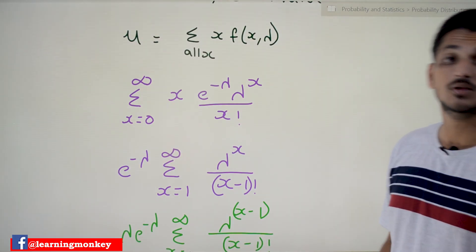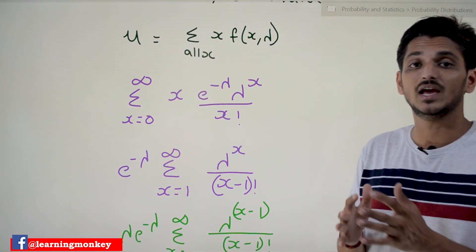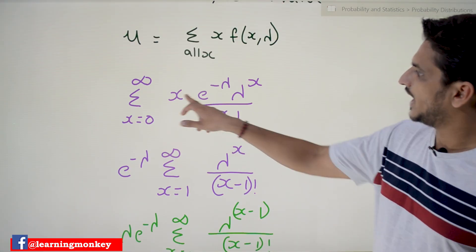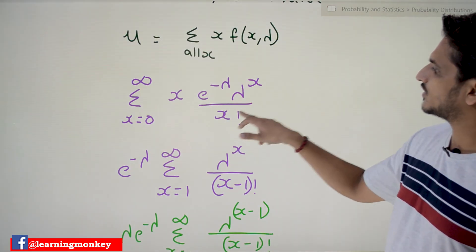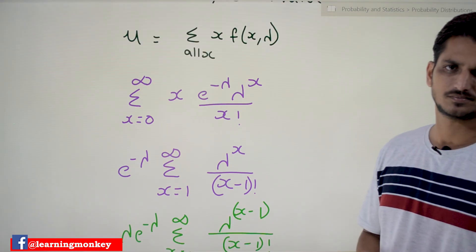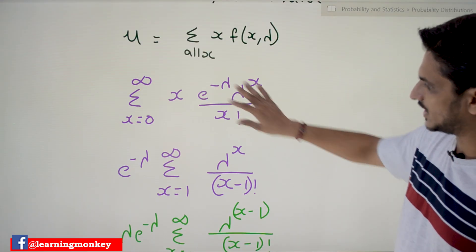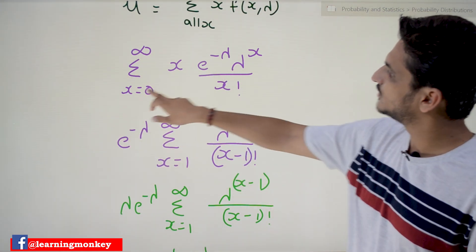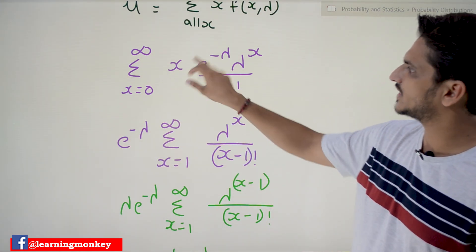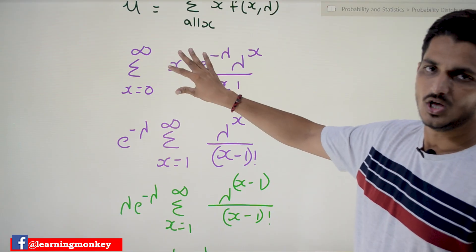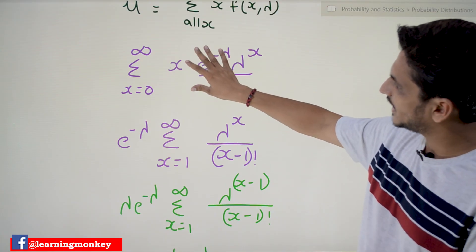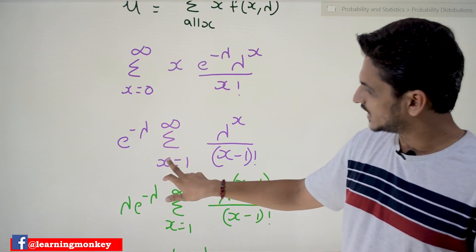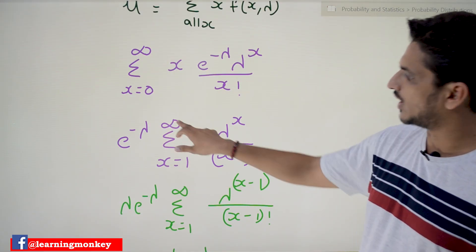In Poisson's distribution we have infinite values, so x goes from 0 to infinity: Σ x · e^(−λ) · λ^x / x!. If you take e^(−λ) outside and substitute x=0, the entire term becomes zero, so there is no need to include the x=0 term. That is why we start the summation from x=1 to infinity.